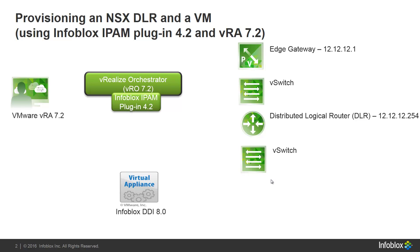This is the current topology I'll be using to demonstrate the integration between Infoblox and VRealize 7.2. I currently have an edge gateway configured with an IP address, as well as a V-switch connecting to the distributed logical router, with its IP address assigned to the DLR. I also have a switch connected to the DLR, and I'm using VRealize Automation 7.2 with the embedded VRO appliance and the Infoblox IPAM plugin 4.2, along with the Infoblox DDI 8.0 virtual appliance.